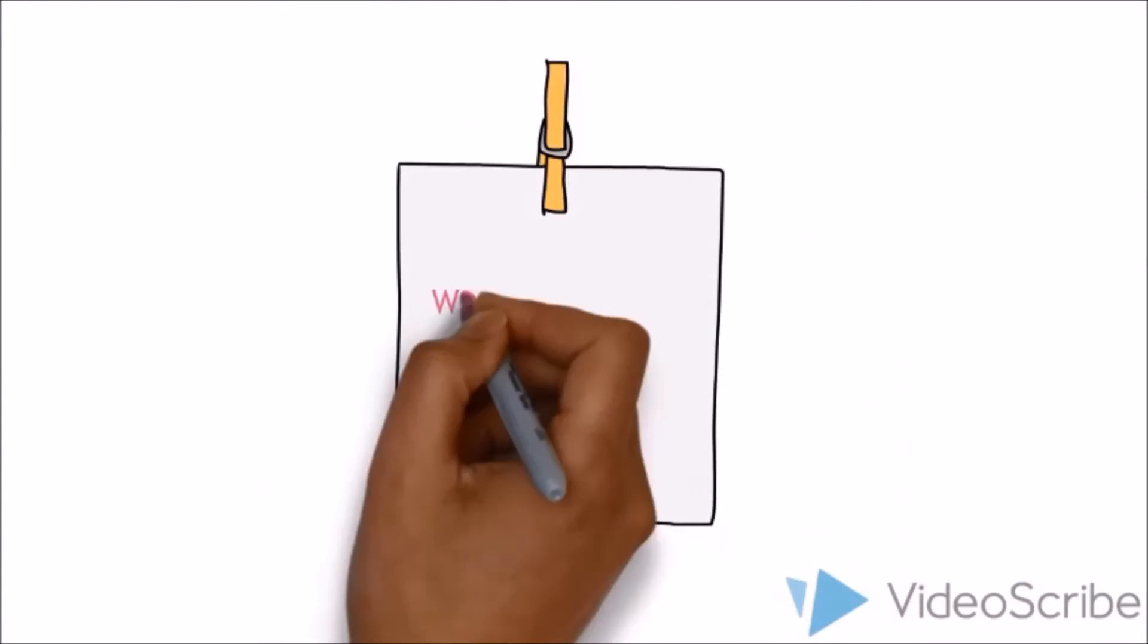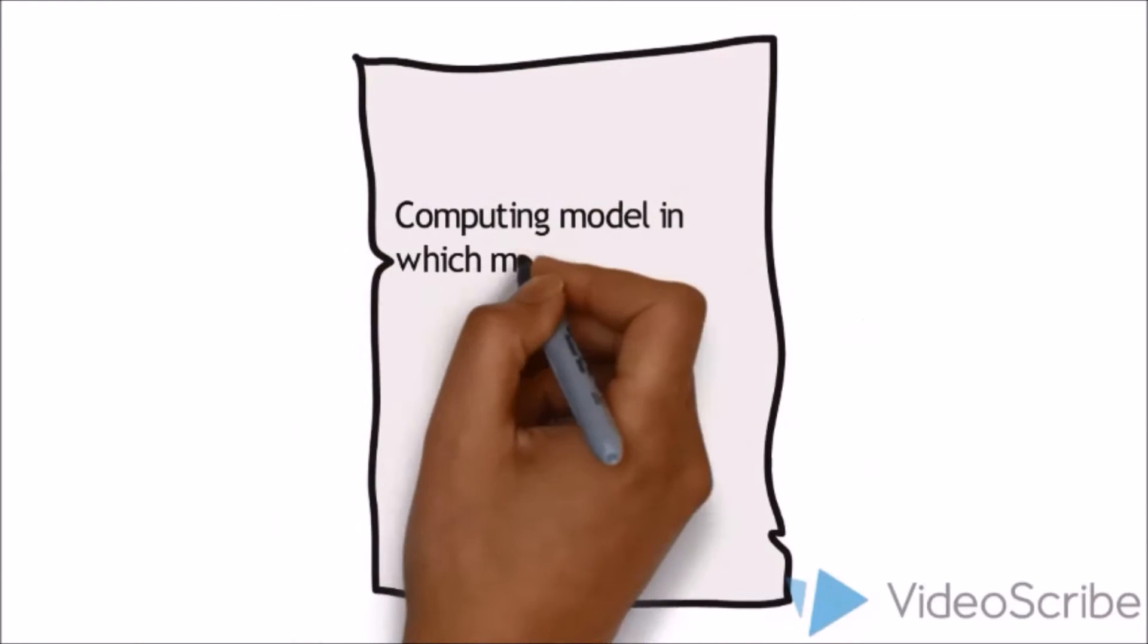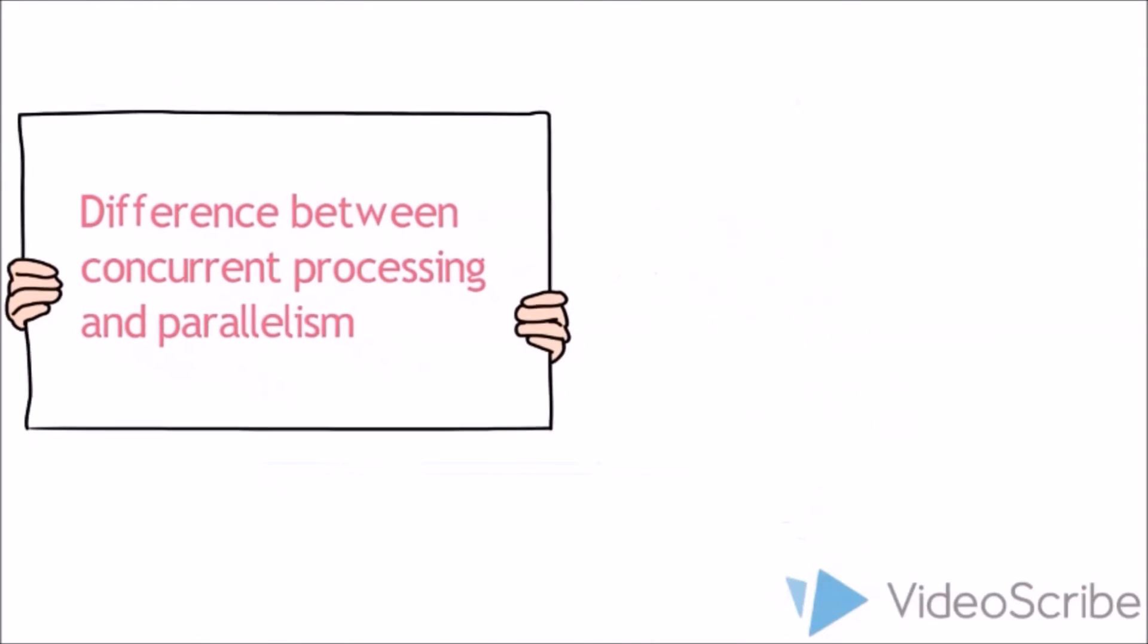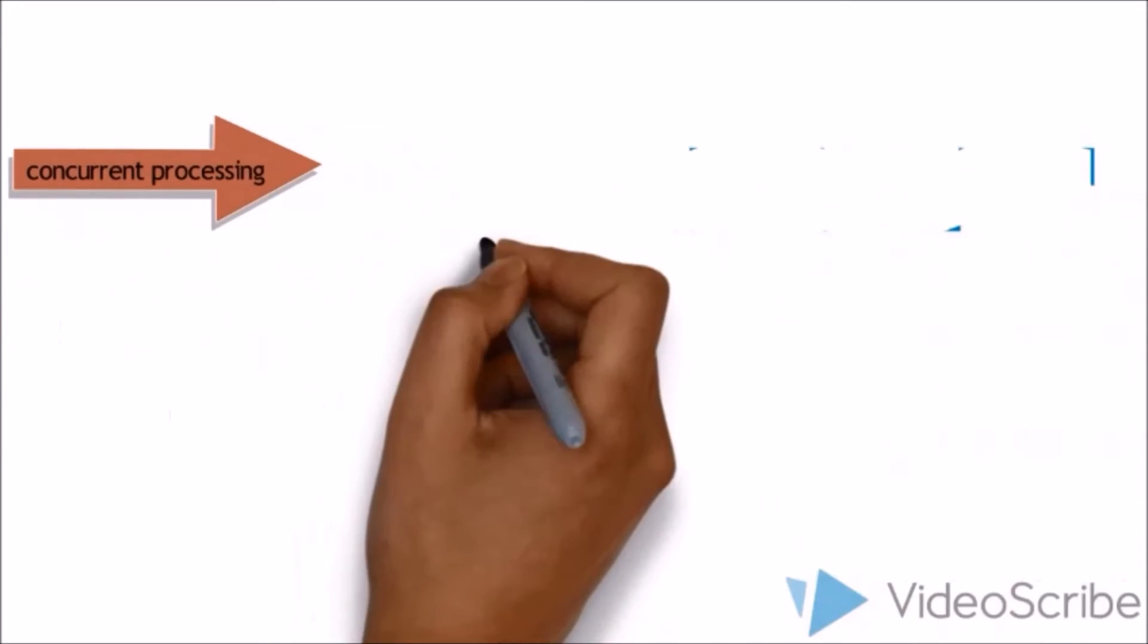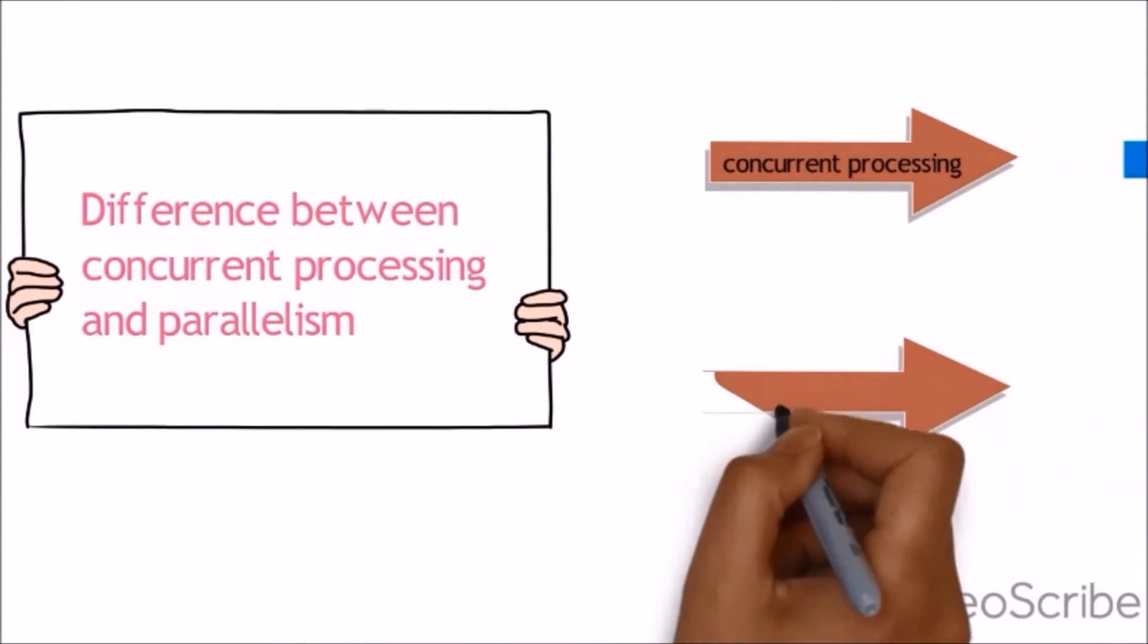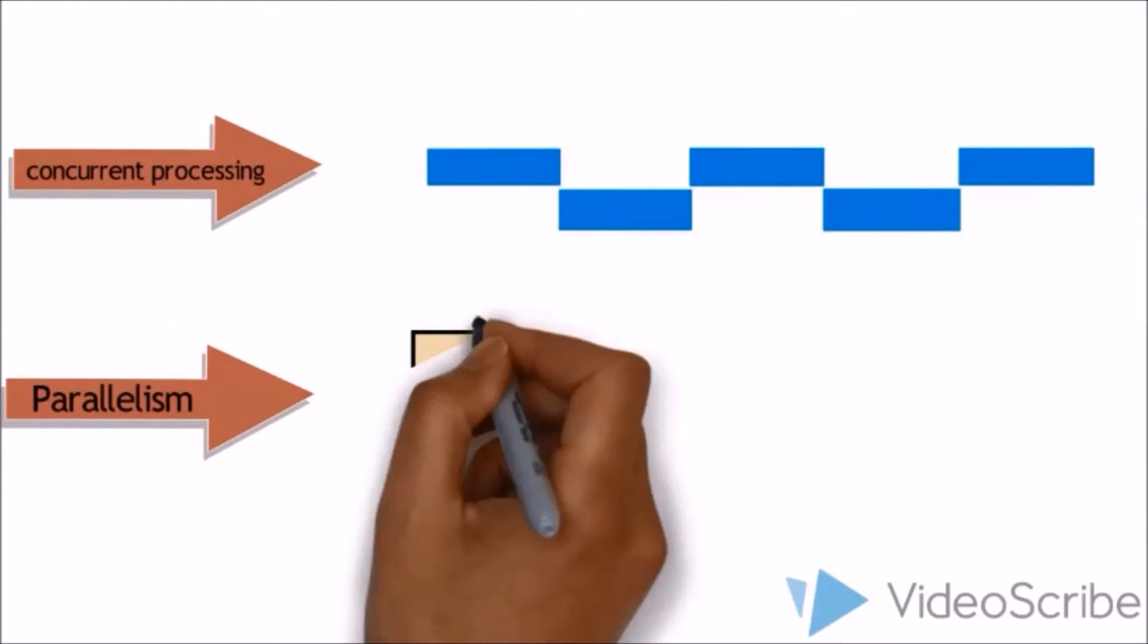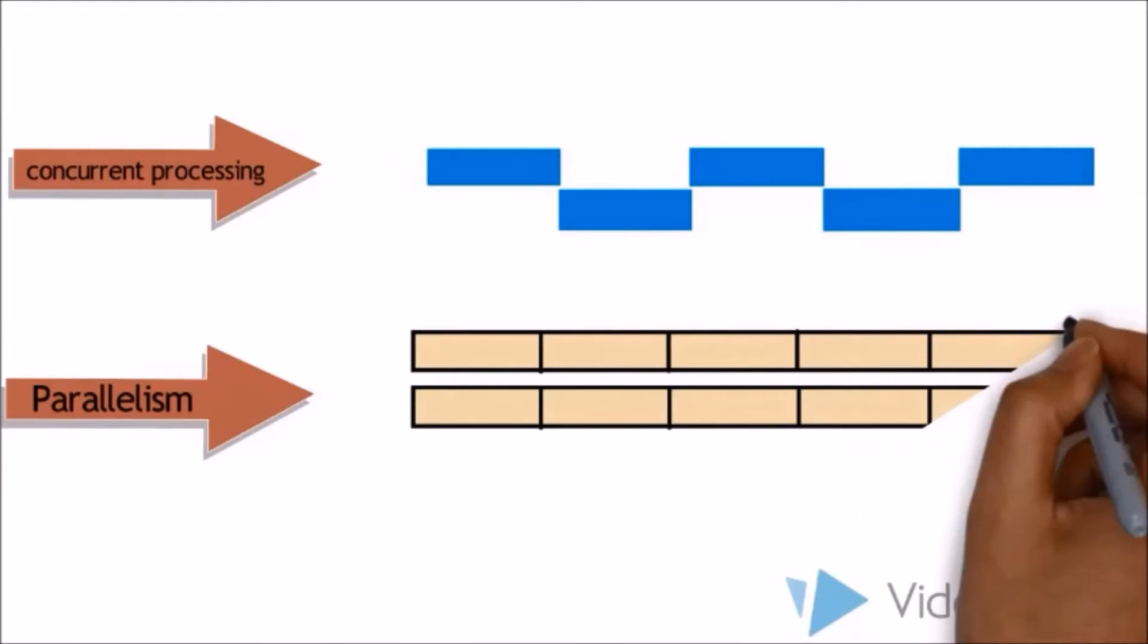Let's move to concurrent processing. Concurrent processing is a computing model in which multiple processes execute instructions simultaneously for better performance. Let's see the differences between concurrent processing and parallelism because many get confused between these two concepts. See these two diagrams showing concurrent processing and parallelism processing. They are different, so don't get confused after this!